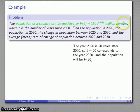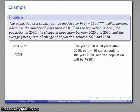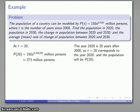There's my formula for P(t), and I'll substitute in my t value of 20. After all the dust settles, I get an estimated population of 273 million persons.